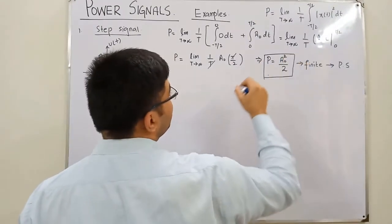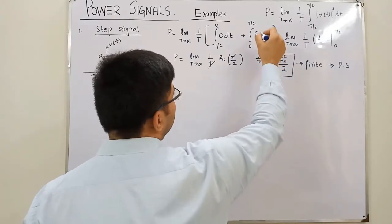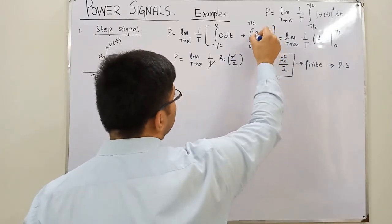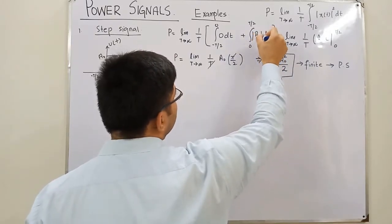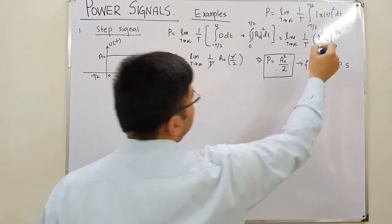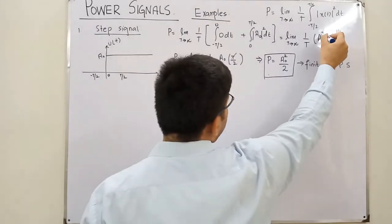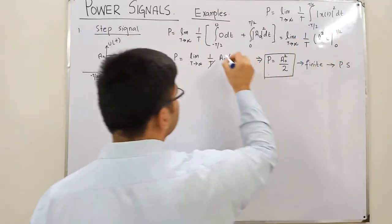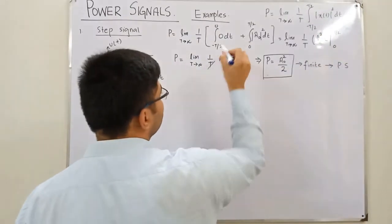The modulus squared term is needed in the power formula. So you can also write the RMS value which is a₀ divided by the square root of 2. That covers the step signal.